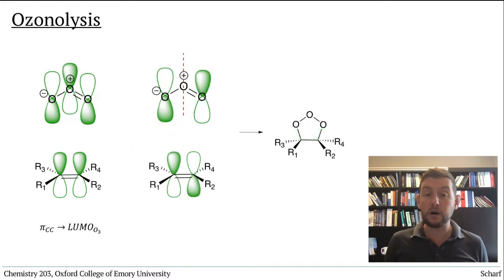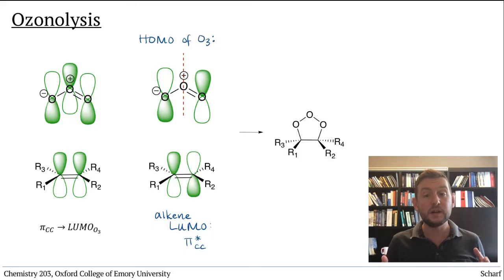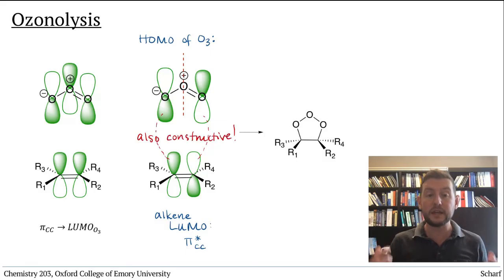The LUMO of the alkene, pi star CC, must also be accepting electrons from the HOMO of ozone. If we line up these two orbitals, we can see that they also have constructive overlap between the oxygen atoms at the ends of ozone with each of the lobes of pi star CC.